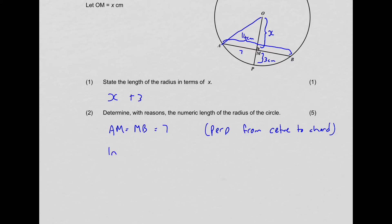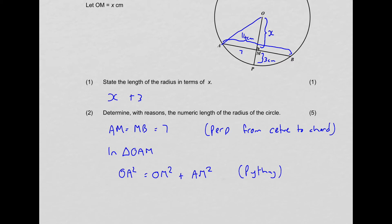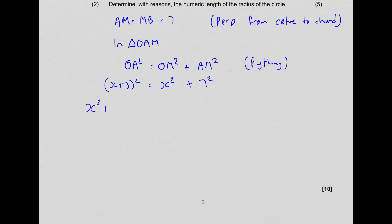In triangle OAM, we can state OA squared equals OM squared plus AM squared, and your reason is Pythagoras. OA equals OP, which is X plus 3. So substitute: X plus 3 all squared equals X squared plus 7 squared. FOIL the left-hand side: X squared plus 6X plus 9 equals X squared plus 49. The two X squareds cancel, leaving 6X equals 40, therefore X equals 20 over 3.